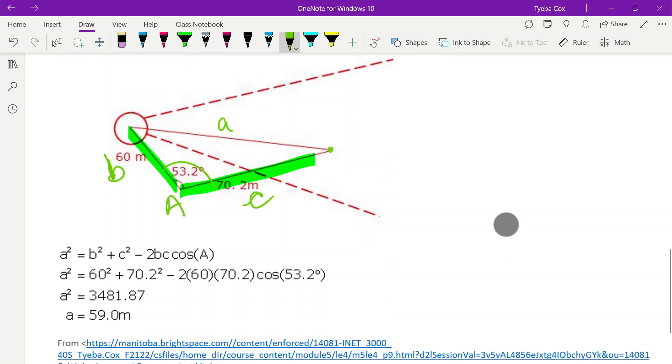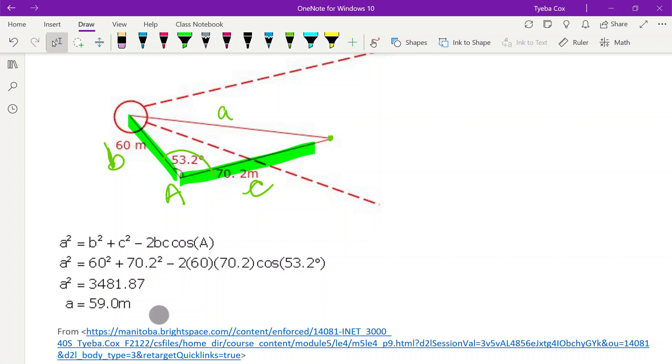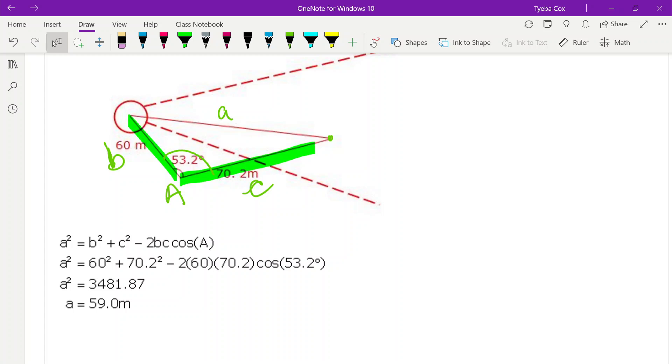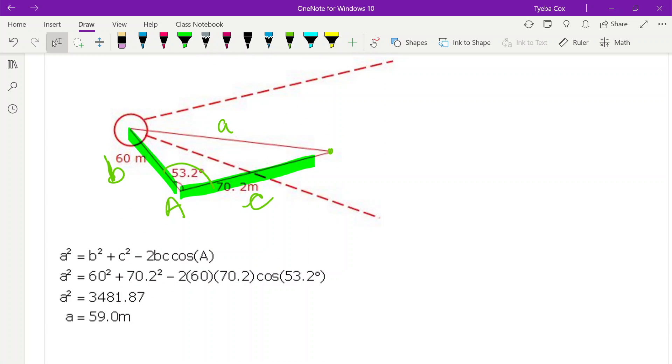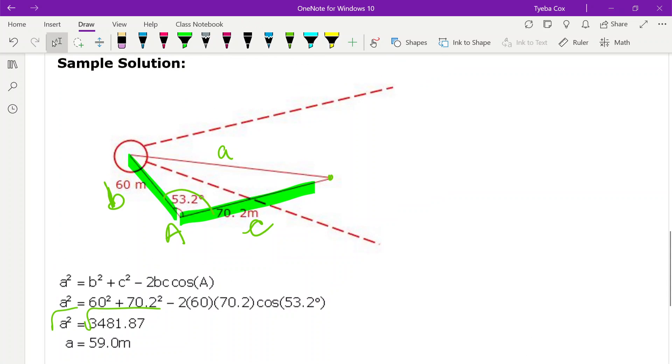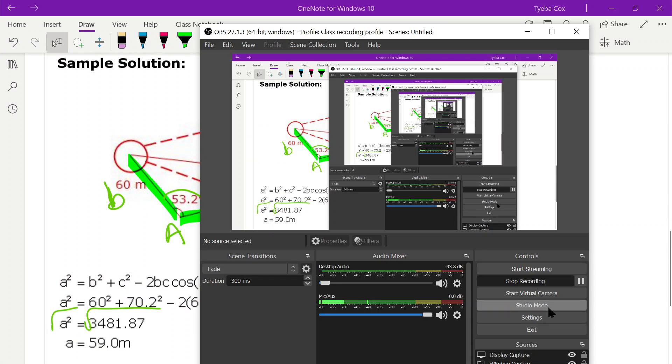So we're going to make our substitutions and we're going to solve for our A. So this gives us A squared once we do all of these calculations here. And then we end up square rooting both sides and get A is equal to 59 meters rounded to one decimal place.